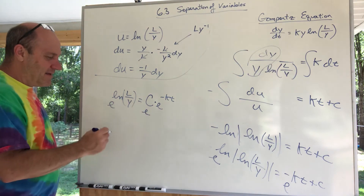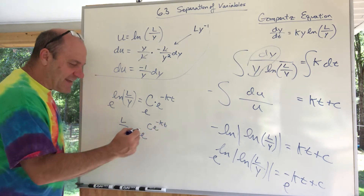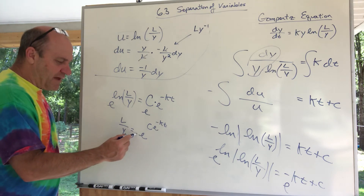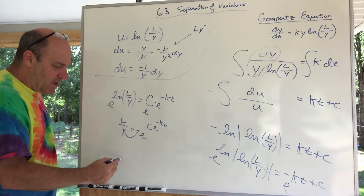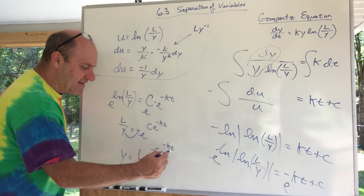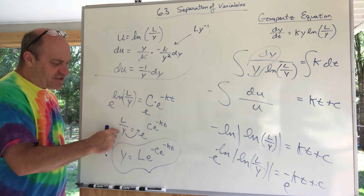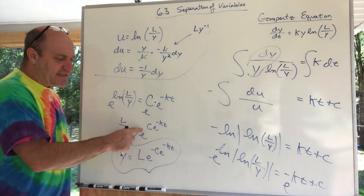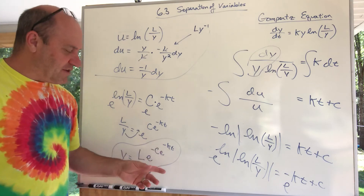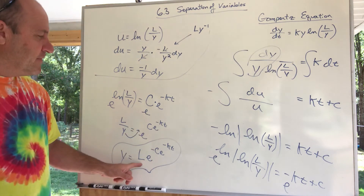Now solving for y: multiply both sides by y and divide by that exponential function, so y equals L divided by e to the (C e to the negative kt). Moving that e function up gives: y equals L times e to the (negative C e to the negative kt). So we have the Gompertz model derived from this differential equation. If you have a carrying capacity — say the book uses 600, so L = 600 — and a couple of initial conditions to find C and k, you've got the full model.